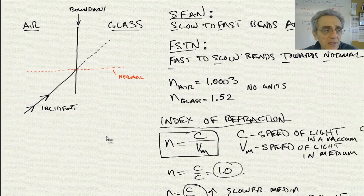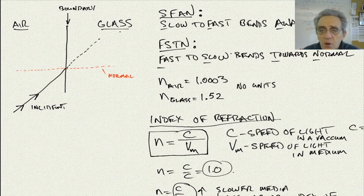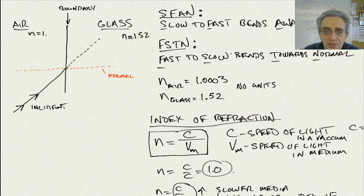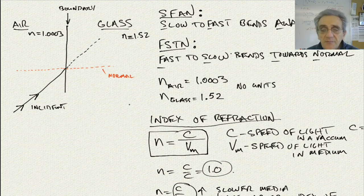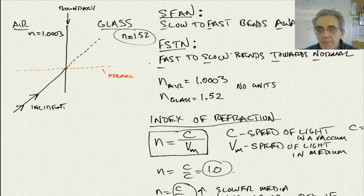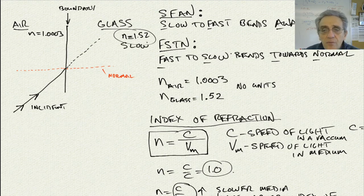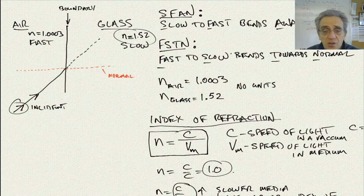Glass has an index of refraction of 1.52, and air has an index of refraction of 1.0003. We can determine which medium is the fast one and which is the slow one. The one with the bigger index of refraction is the slow one. So glass is slow, and since air is closer to 1.0, air is fast.